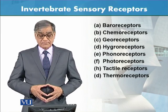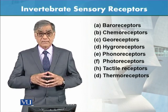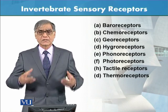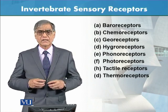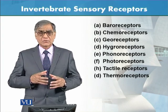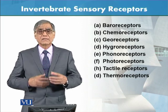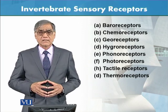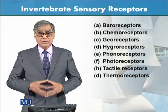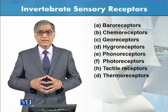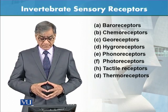Then there are photoreceptors — that is, light: strong light, diffuse light, and no light. In response to all these different light conditions, invertebrates behave differently.